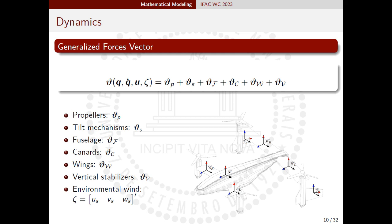The generalized force vector is divided into six components that represent non-conservative forces and moments applied by the propellers, tilting mechanisms, fuselage, canards, wings, and vertical stabilizers, respectively.